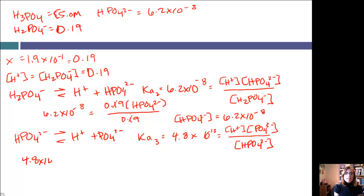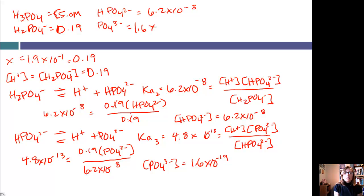We know H+ is 0.19, we're solving for PO4-3, and we know HPO4-2 is 6.2 times 10 to the negative 8. So if we do some math, we get that the concentration of PO4-3 equals 1.6 times 10 to the negative 19. And there's all of our equilibrium concentrations.